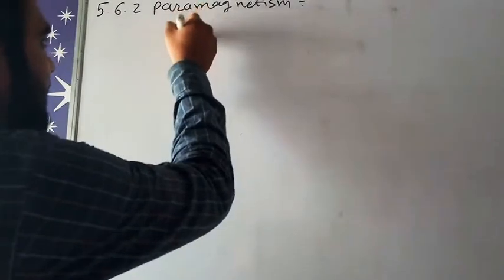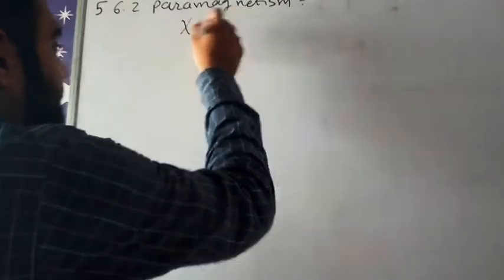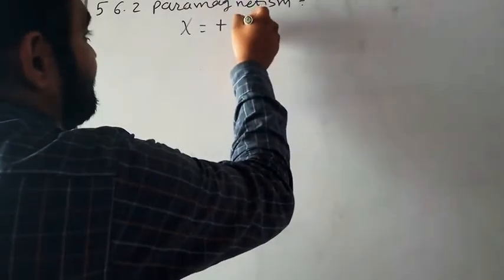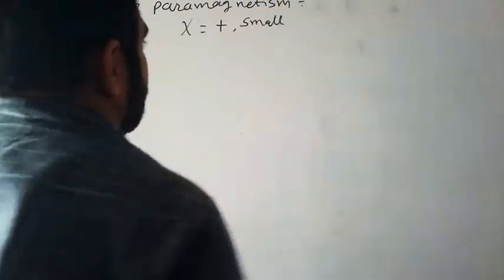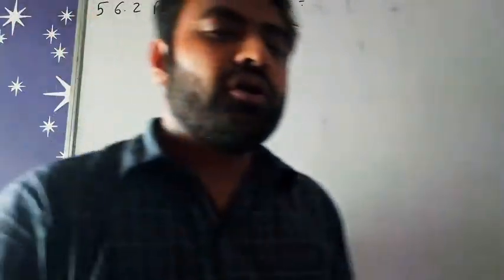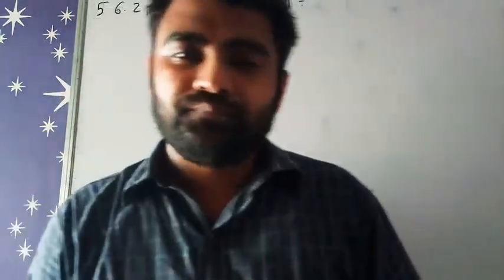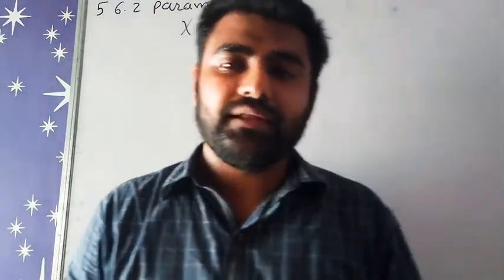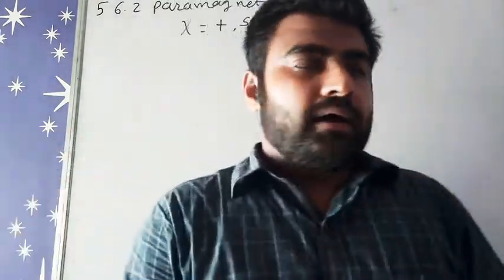There's one condition for diamagnetic material, similarly here one condition for paramagnetic material. That condition is chi must be positive and it is a small value. So it is positive and small value, and this will decide that the material is paramagnetic material.